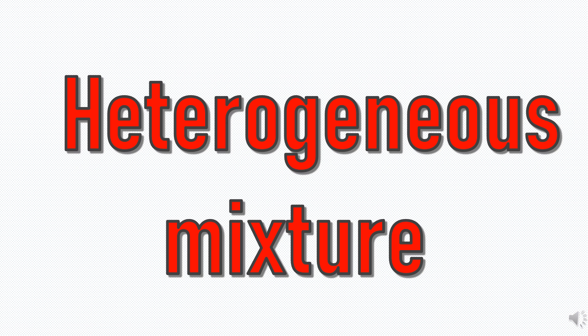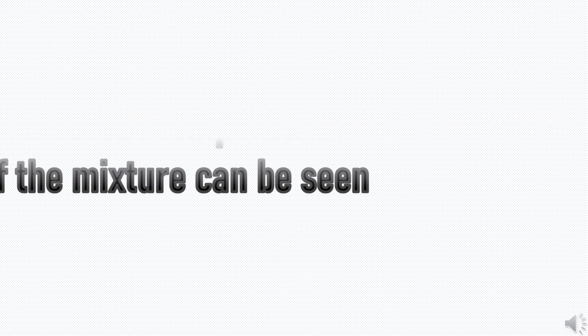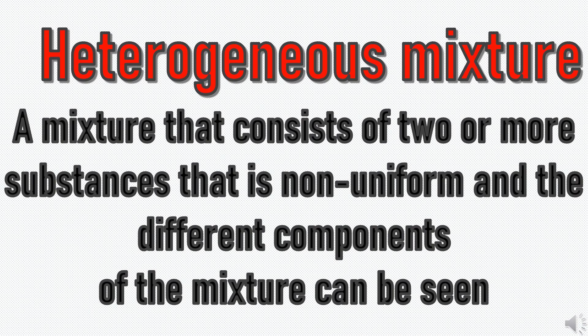Please pause the video, write the definition of the term on screen, then play it to check. Trying first helps you learn better. Heterogeneous mixture. Heterogeneous mixture is a mixture that consists of two or more substances that is non-uniform, and the different components of the mixture can be seen.